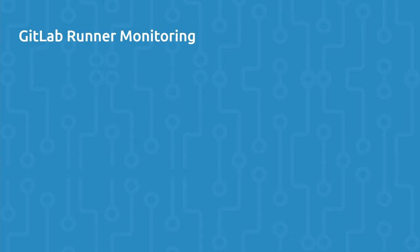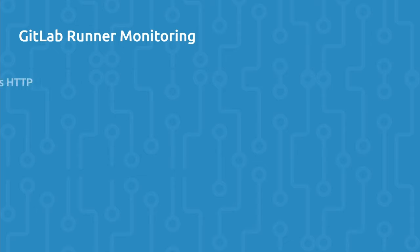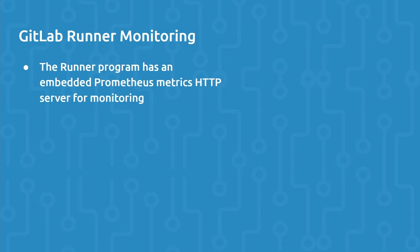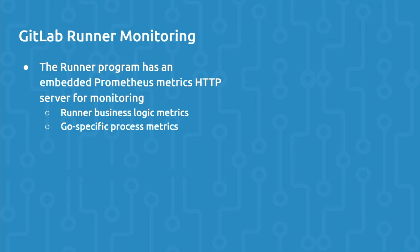Something worth mentioning is the ability to monitor GitLab Runners. The Runner program has an embedded Prometheus Metrics HTTP server for monitoring. You can monitor metrics like GitLab Runner business logic, Go-specific process metrics, general process metrics, and build version information.